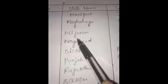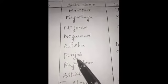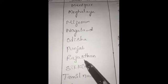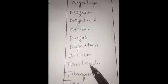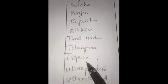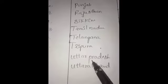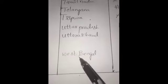Meghalaya, Mizoram, Nagaland, Odisha, Punjab, Rajasthan, Sikkim, Tamil Nadu, Telangana, Tripura, Uttar Pradesh, Uttarakhand, West Bengal. Those are all 28 states of India.